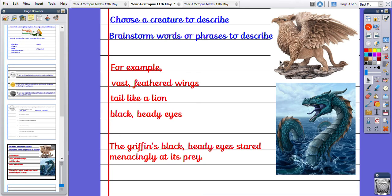This top figure is of a griffin. And the lower one is of a sea serpent. So you could find some other pictures to help you think of more vocabulary.